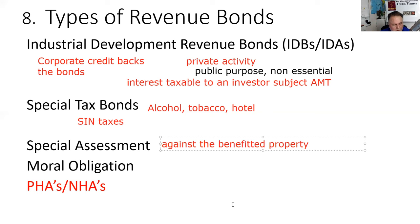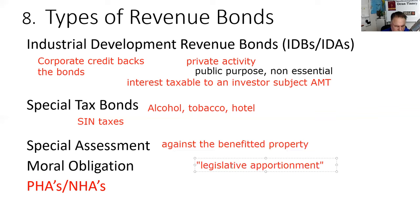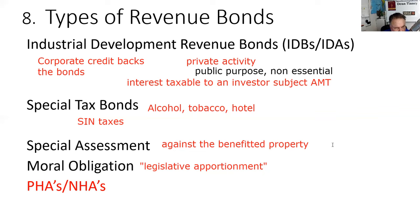Moral obligation bonds: John C. Fremont Hospital in Mariposa, California wanted to issue $10 million in bonds to modernize and expand. Almost nobody had heard of the hospital, so they went to the state of California and asked if it would be morally obligated to pay back the bonds. California said yes. Your confirmation would say 'John C. Fremont Hospital Revenue District Bonds, a moral obligation of the state of California.'